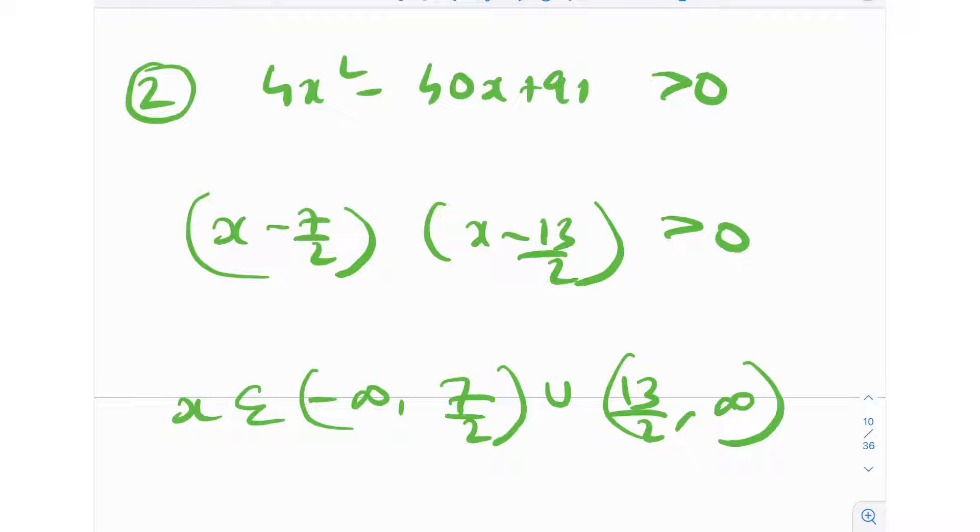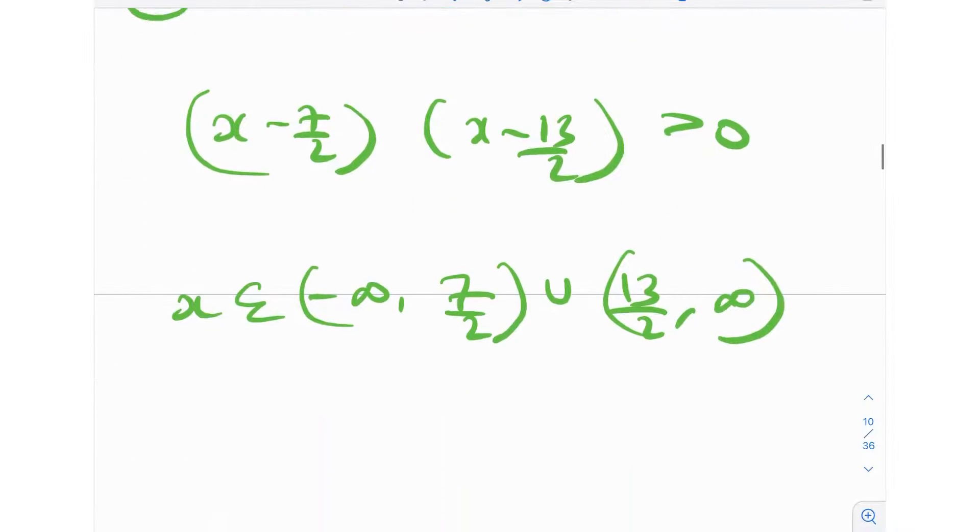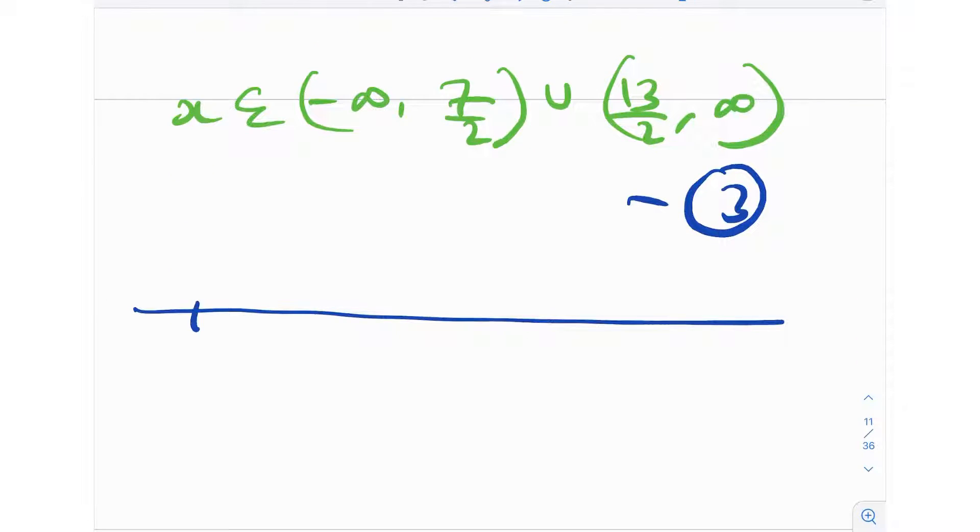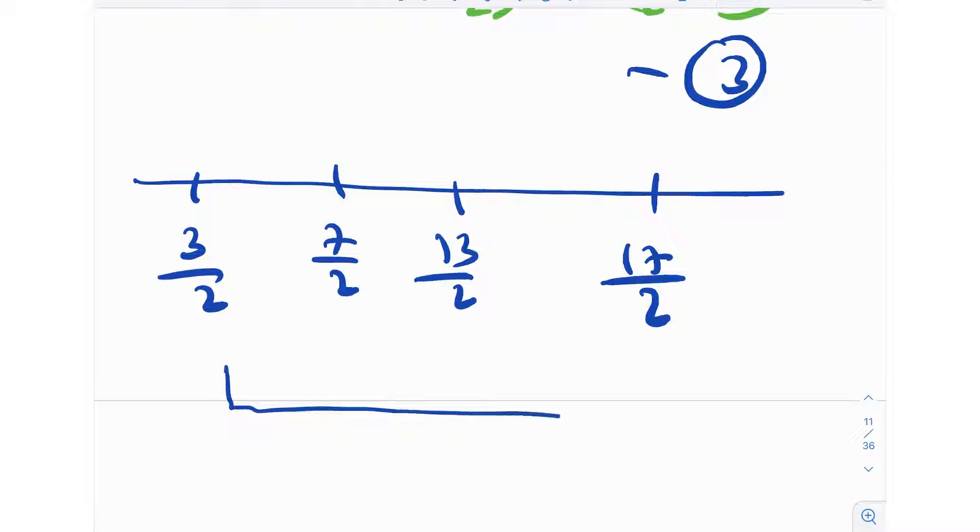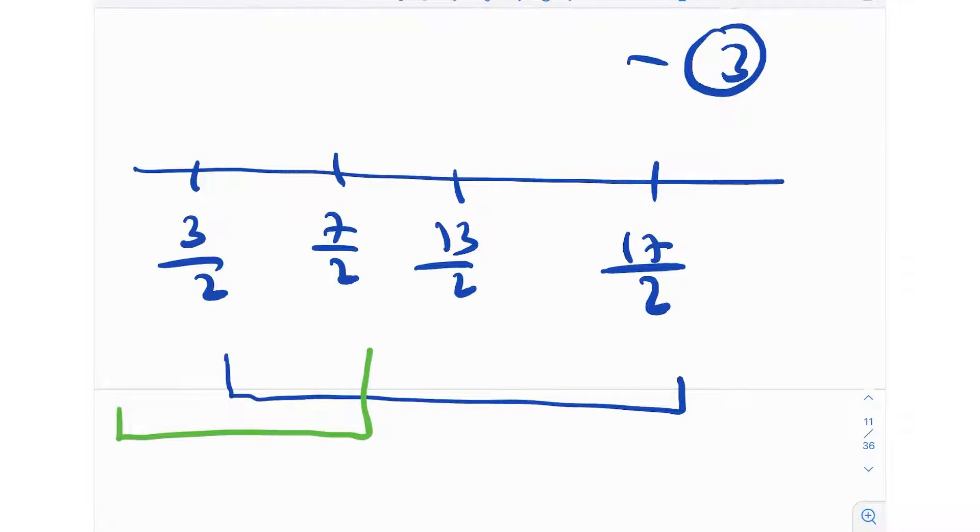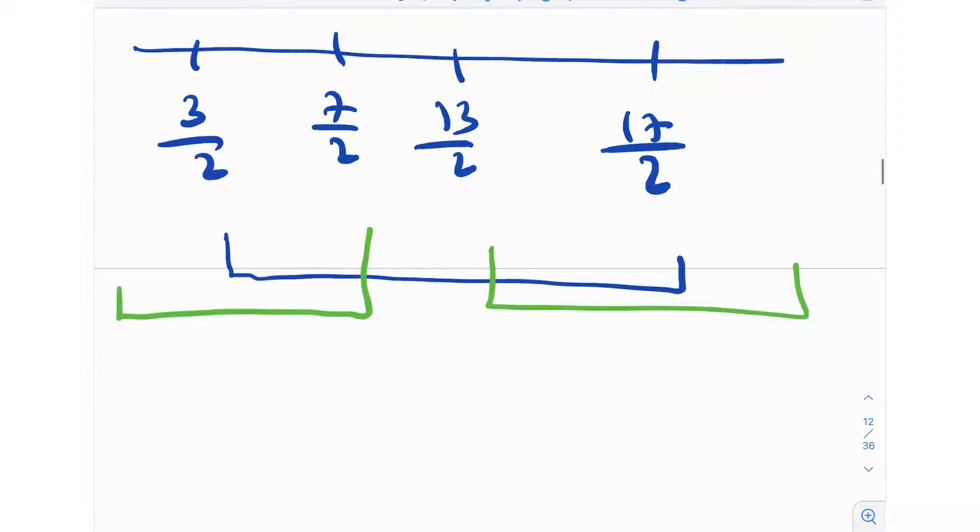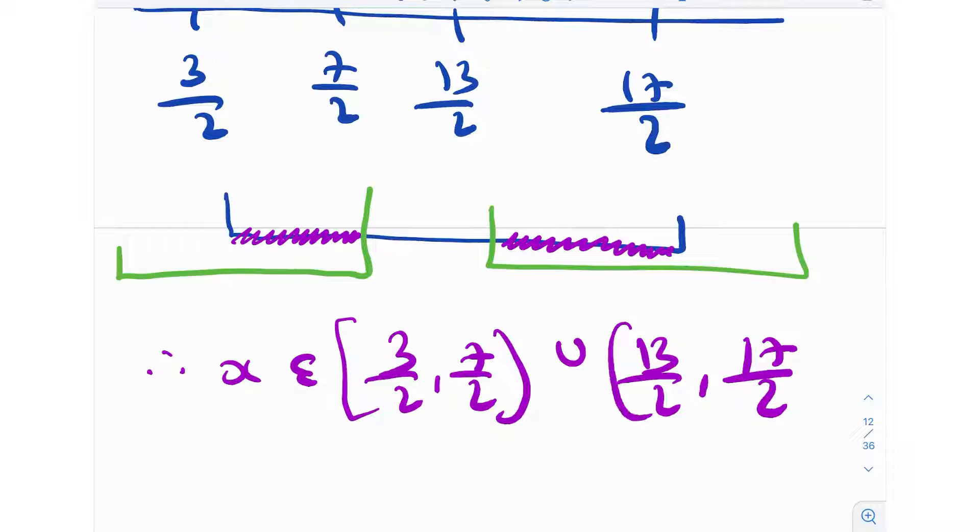Now that we've established these things, established certain values that x can take, we need to take the intersection of both these values. Whatever we've received over here and over here, we need to take the intersection. Let's just plot them on the number line and see what the range of values is intersecting. We have 3/2, 7/2, 13/2, and 17/2. Equation number 2 says that x lies between 3/2 and 17/2. Equation number 3 says that it lies between -∞ to 7/2 and 13/2 to ∞. Therefore, you take the common region. Therefore, x belongs to [3/2, 7/2] ∪ [13/2, 17/2].